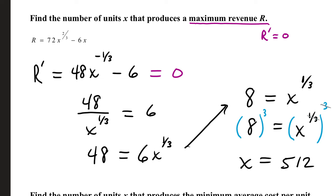Let's take our first derivative. 72 times two-thirds is 48. Take 1 off of your exponent, that's negative one-third. Our second term has a derivative of negative 6, and we want to find the critical number since we're maximizing revenue. Setting that first derivative equal to 0 and solving for x, we add 6 to both sides.